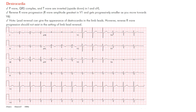So what can we expect to see in dextrocardia? The P wave, as well as the QRS complex and the T waves, are inverted — they're upside down in the lateral limb leads. So here in lead one and AVL, notice that your P waves are negative, your QRS complexes are negative as well in these leads, and your T waves are negative here as well. That's the lateral limb leads — one and AVL.